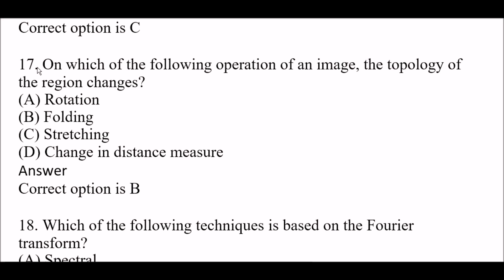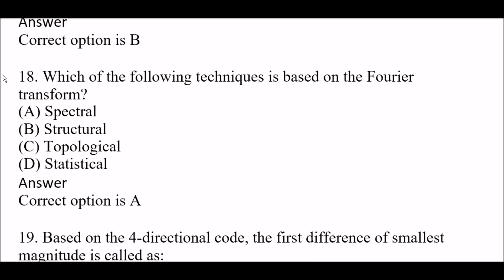Next question: On which of the following operations of an image does the topology of the region change? Option A: rotation, Option B: folding, Option C: stretching, Option D: change in distance measure. The right answer is Option B, folding. In the folding operation of an image, the topology of the region changes.